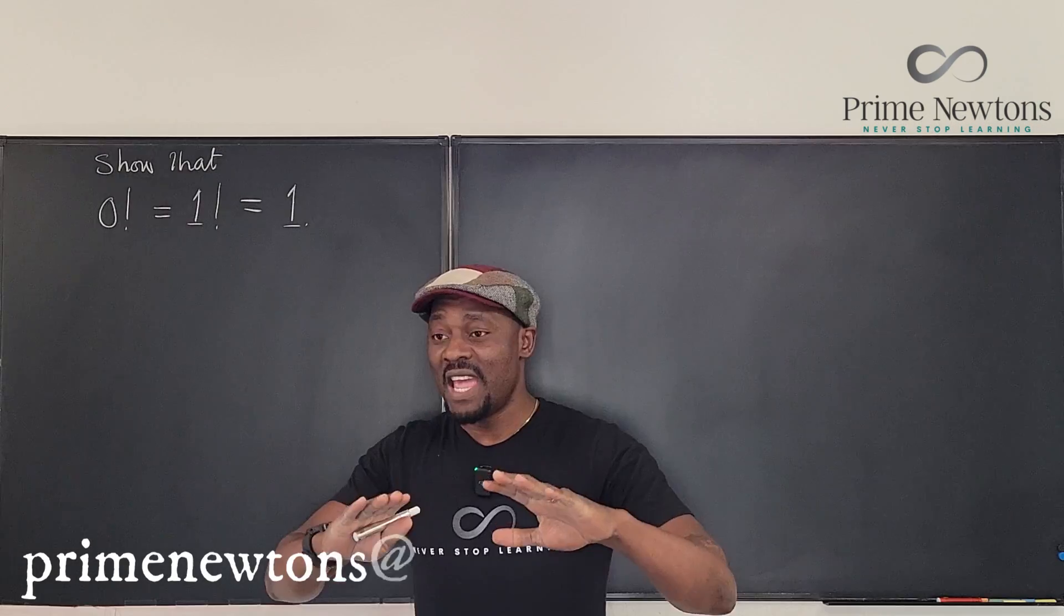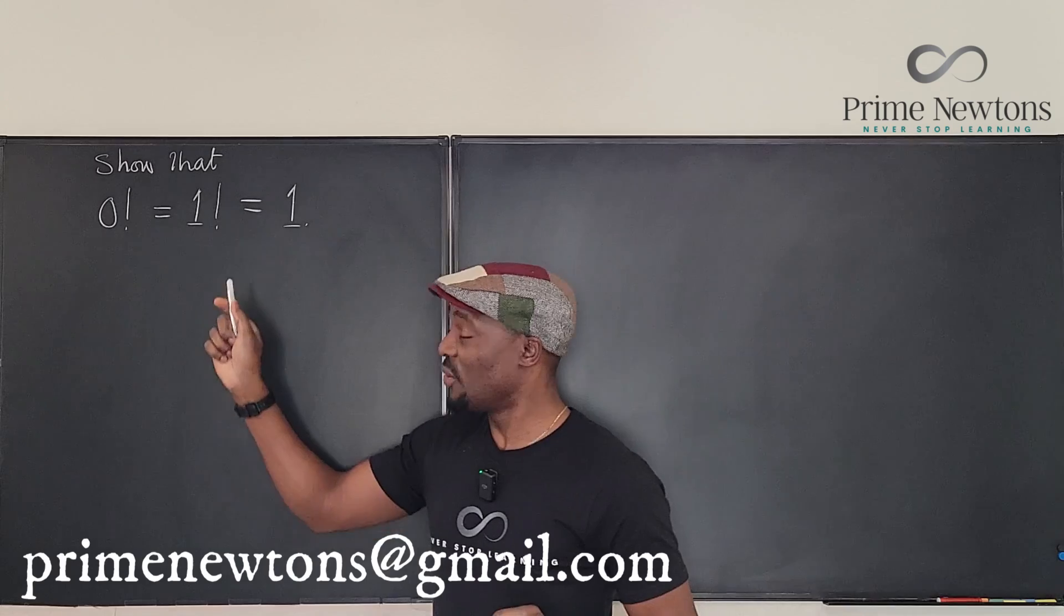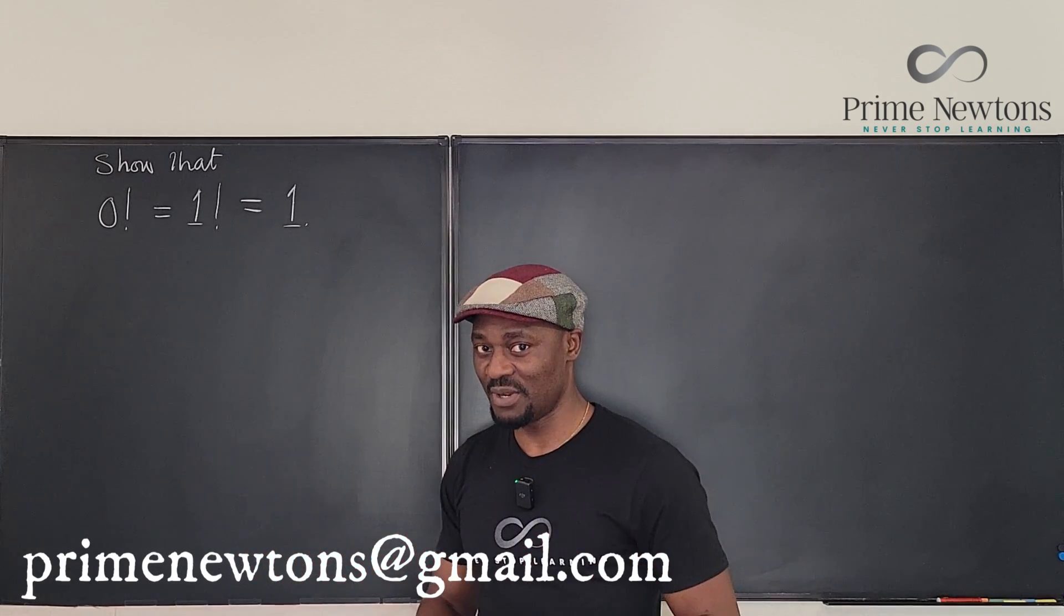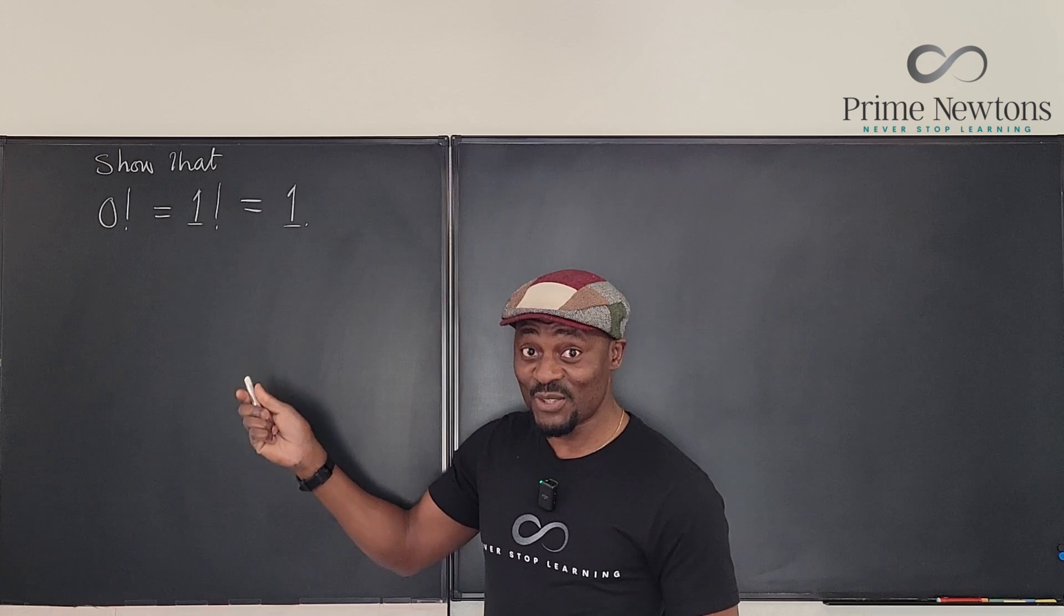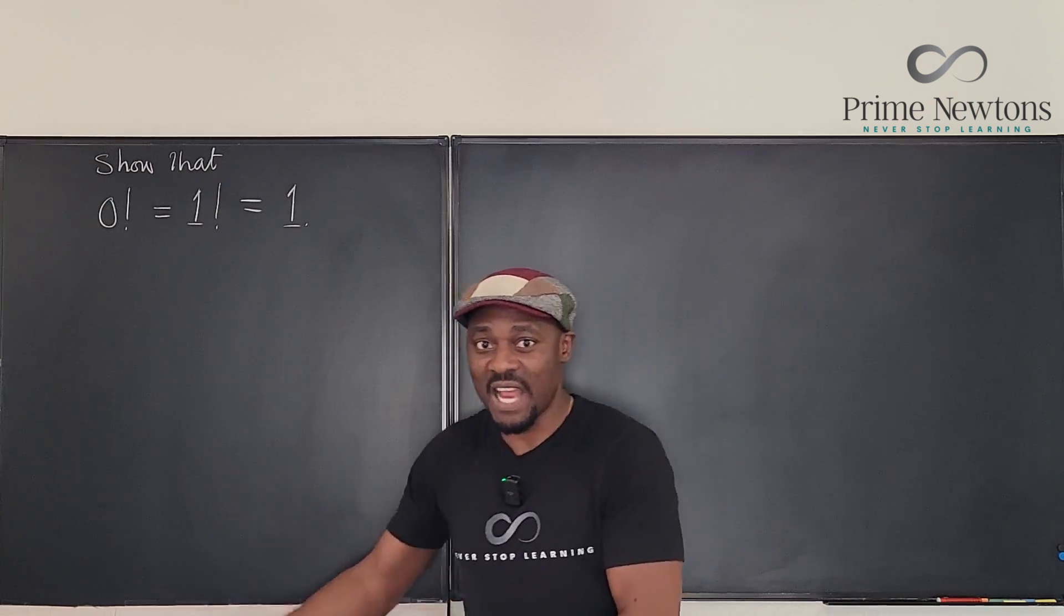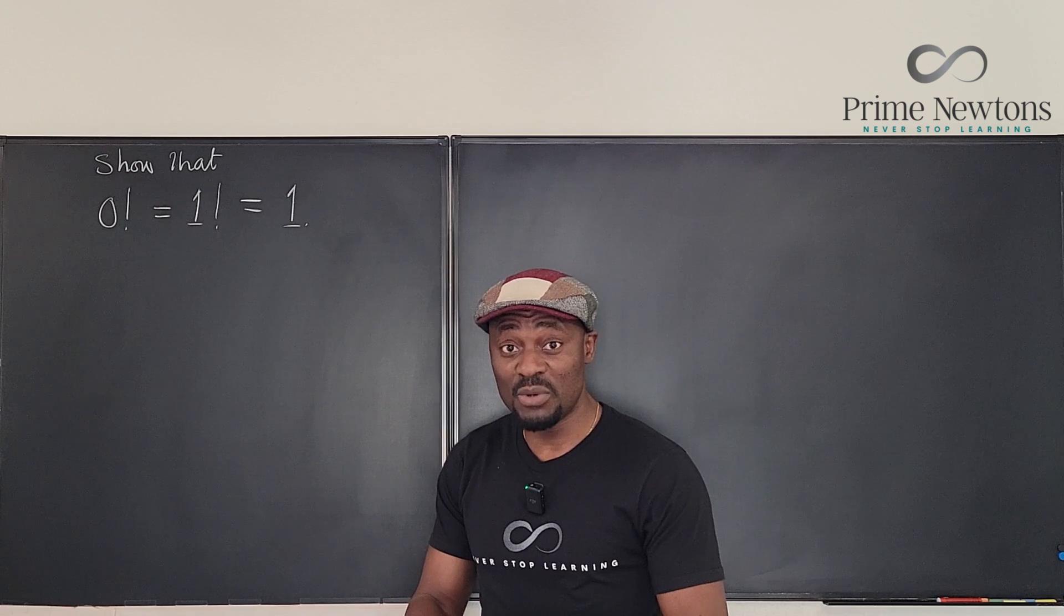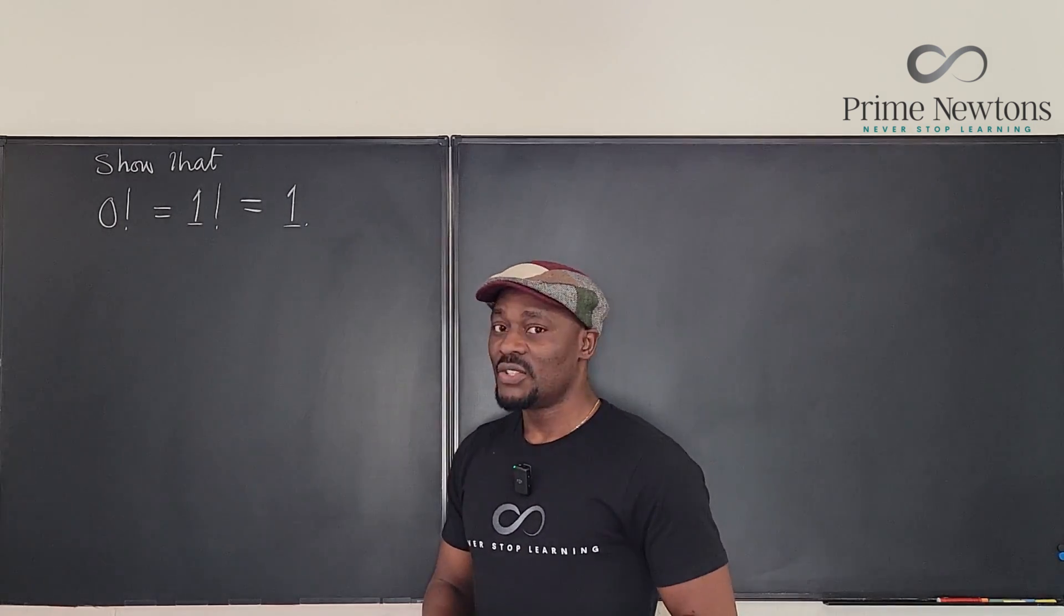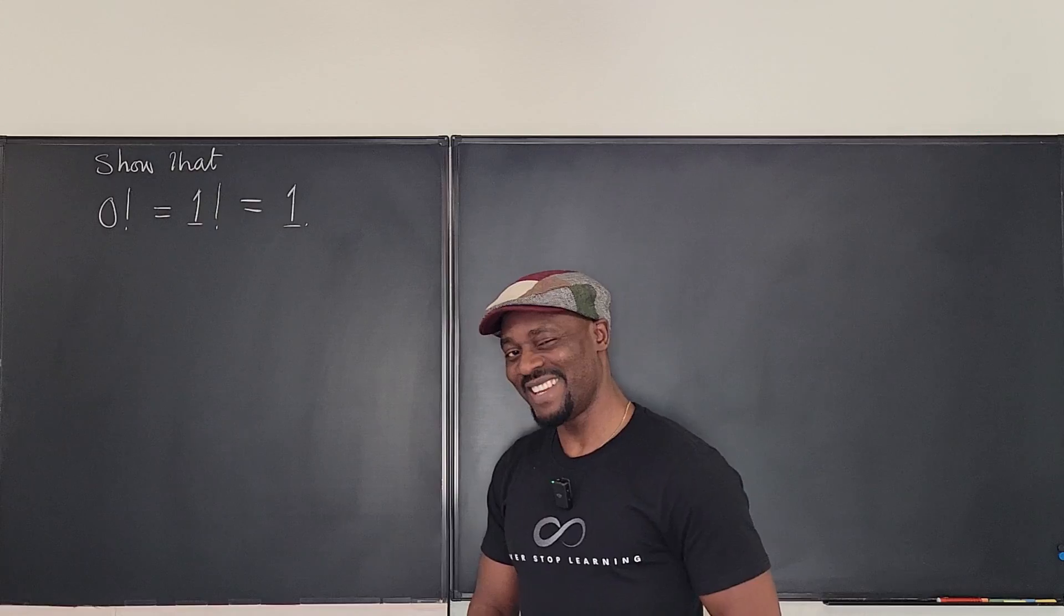Welcome to another video. In many factorial videos, I've seen people wonder why zero factorial is equal to one factorial and one factorial is one. That one is easier to deal with because it's a natural number. So we're just going to use natural numbers to get zero factorial. Let's get into the video.